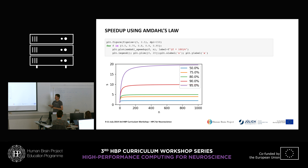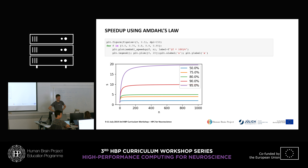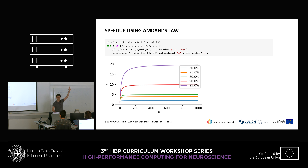If we have 80 percent parallelizable, 20 percent remains serial, giving a maximum speed-up of 5. That doesn't sound that great yet.